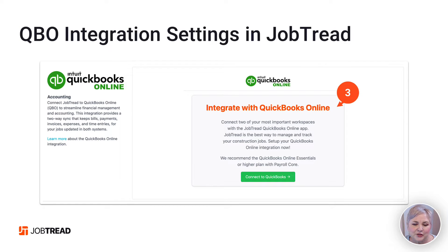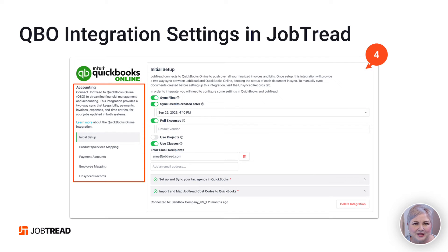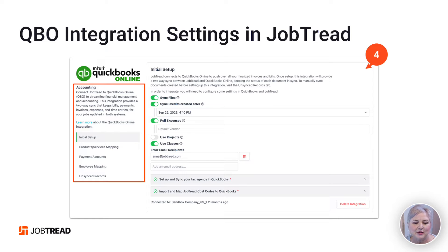On the next screen you'll click Connect to QuickBooks, and don't worry, nothing dramatic is going to happen until you get done with your settings. Let's talk about the initial integration settings in JobTread. We've got five areas that we need to work through: the initial setup, the products and services mapping, the payment accounts, the employee mapping, and we'll talk about the unsynced records.